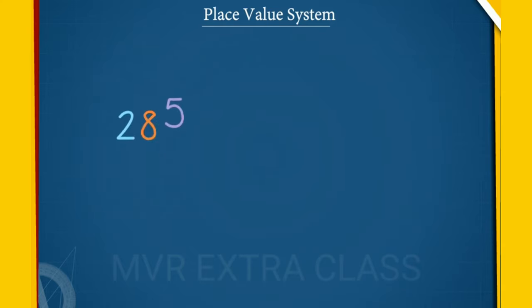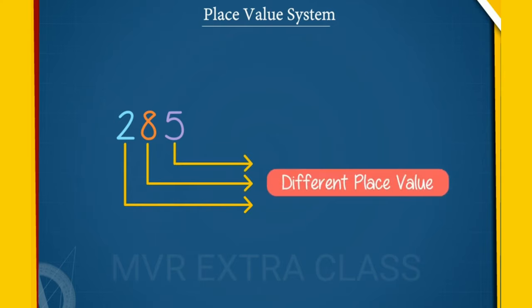Another example is 285. The 3 digits have different place values: 5 and 8 and 2.